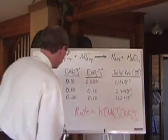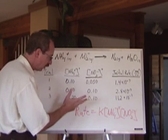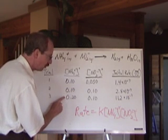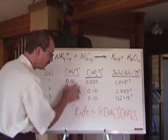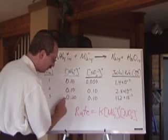Now look at this one. When you compare lines of data two and three, trials two and three, look what happens. The concentration of the NH4 positive is doubled here. This stays the same, so that's good. As long as one stays the same and the other changes, we can figure out what's happening. This stays the same. This doubles.